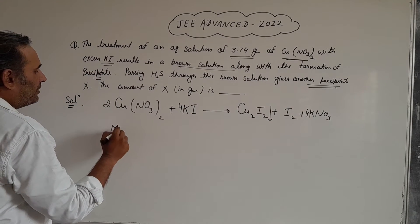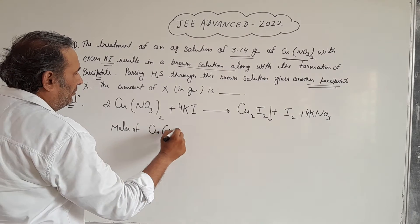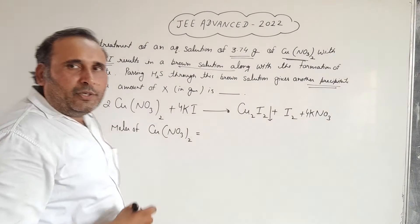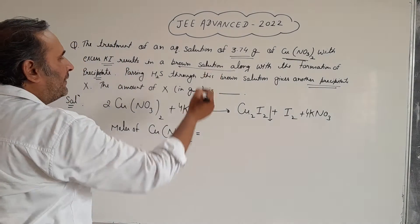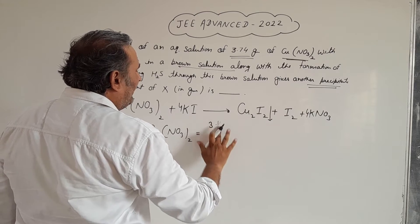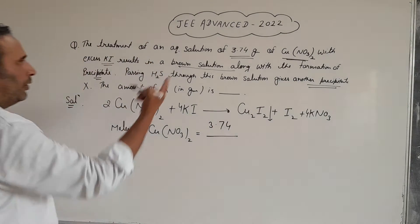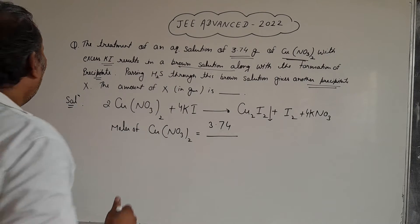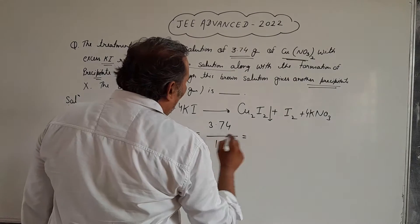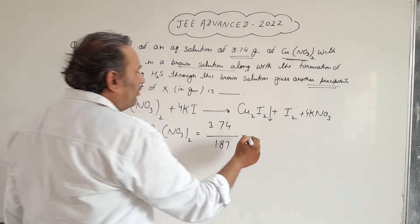Moles of copper nitrate Cu(NO₃)₂ are equal to mass divided by molecular weight. The mass we are taking is 3.74 grams, and the molecular weight of copper nitrate is equal to 187. When we calculate it, the answer will be 0.02 moles.